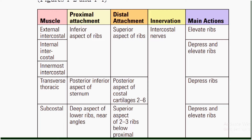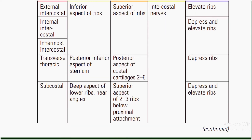The subcostal muscles have a proximal attachment at the deep aspects of the lower ribs near their angles, and a distal attachment at the superior aspects of ribs two and three below the proximal attachment. The main action of the subcostal muscle is to depress and elevate the ribs.